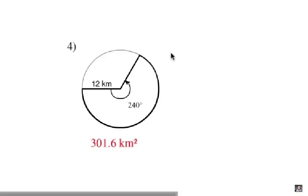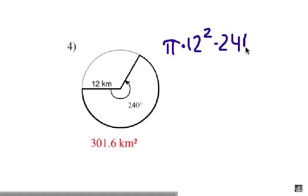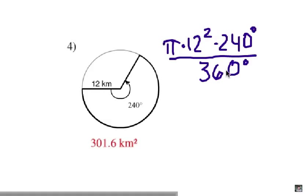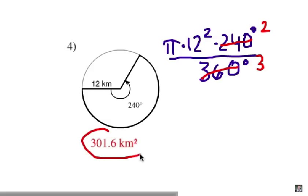Number 4 — I hope you tried it. We're going to take pi times the radius of 12 and square that, then multiply by a 240-degree central angle and divide by 360. You can factor out 120, which leaves a 2 and a 3. Multiply 3.14 times 12 times 12 times 2, then divide by 3. The answer is 301.6.